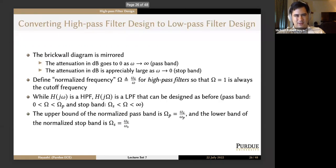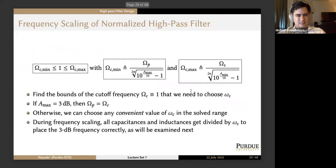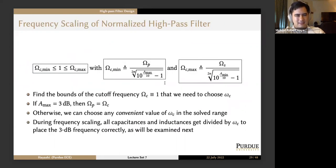For a third-order T topology with a known RL, we get RL = 1 Ω, L2 = 1/2 H, C = 4/3 F, and L1 = 3/2 H. We actually choose Ω_C so that Ω_C_min < Ω_C (= 1 by definition, since it's ω_C/ω_C) ≤ Ω_C_max, where Ω_C_min = Ω_P / (2n-th root of 10^(a_max/10) − 1) and Ω_C_max = Ω_S / (2n-th root of 10^(a_min/10) − 1).